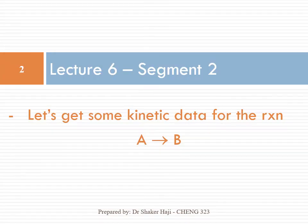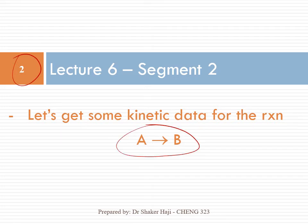Welcome back to segment 2 of lecture 6. We are still in chapter 2 and let's get some kinetic data for the reaction A goes to B — kinetic data, so we need to know the rate of reaction, and preferably as the reaction progresses.